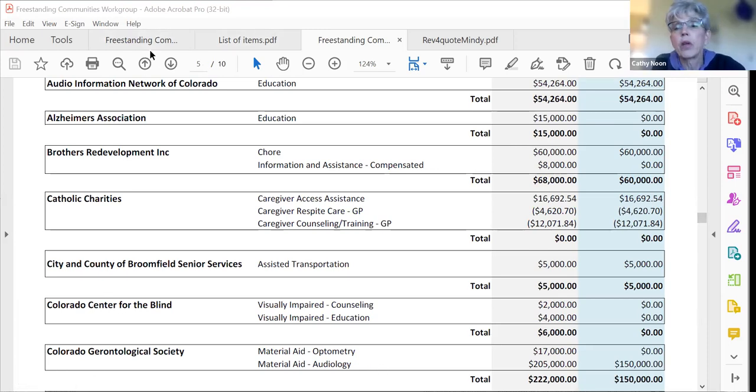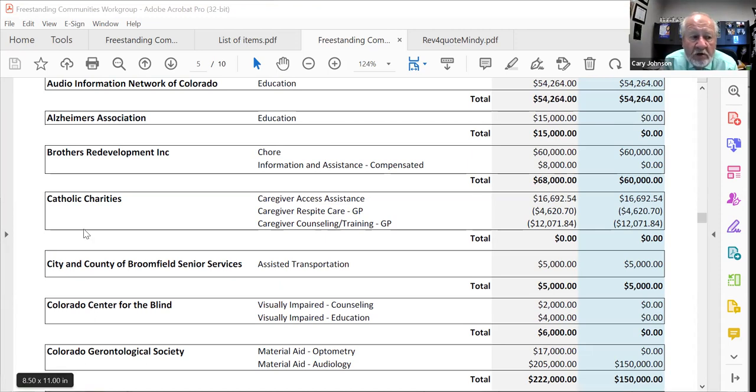I certainly can let Dawn go first, but one of the things that we looked at was the money that was being returned came out of certain categories. So chore services was one that we had quite a bit come back from certain organizations. So in order to sort of stay with our original, what we value and what was needed, we tried to give that money to others that could do chore services. So does that make sense? Yes. So I think, I think as a group, we had looked and tried to look this time for real hands-on services. For instance, Brothers Redevelopment, we gave them $60,000 in chores, but we did not give them the $8,000 for information and assistance compensated. I mean, that's a tough call, but I think we are really looking for hands-on direct service to older adults.